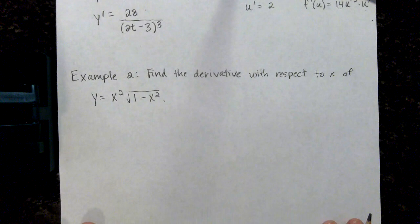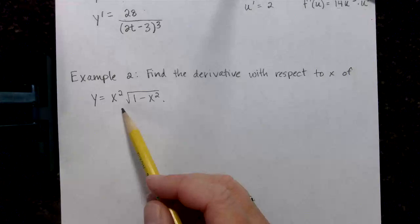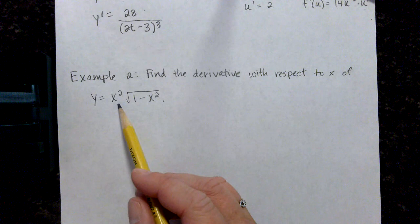Alright let's move on to example 2. This time we want to find the derivative with respect to x of y equals x squared times the square root of 1 minus x squared.